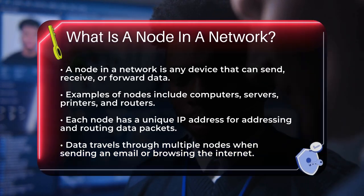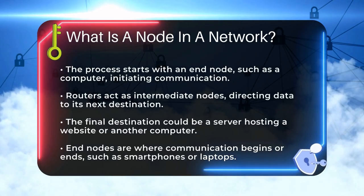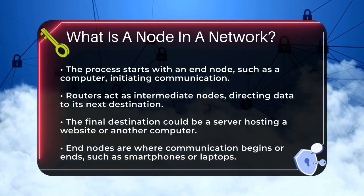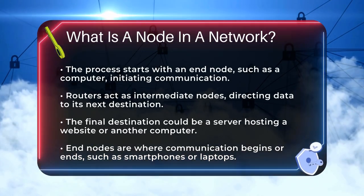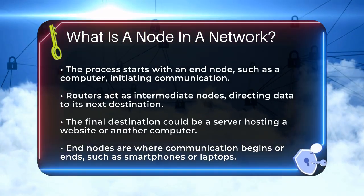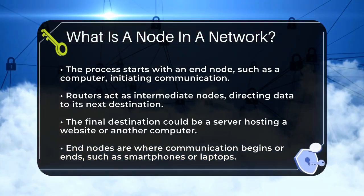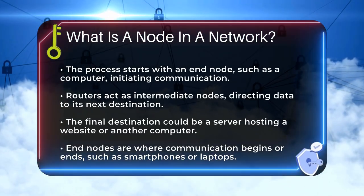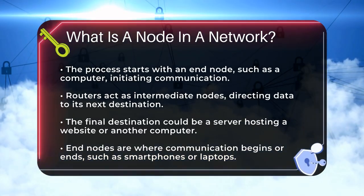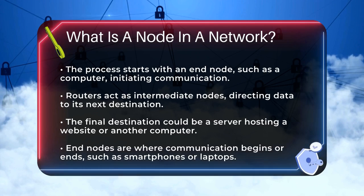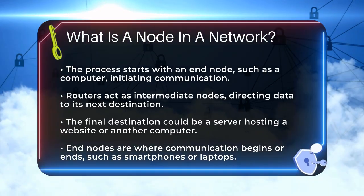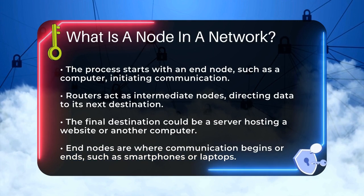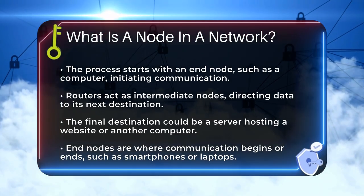When you send an email or browse the internet, your data travels through multiple nodes. For instance, your computer is a node that initiates the communication. The data then goes to a router, which is another node that directs the data to its next destination. This process continues until the data reaches its final node, which could be a server hosting a website or another computer.